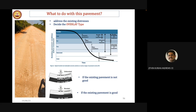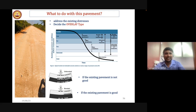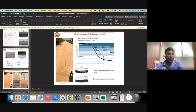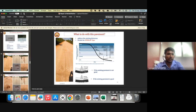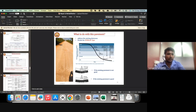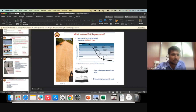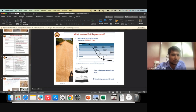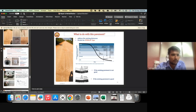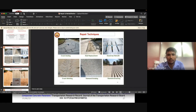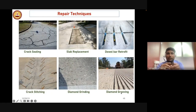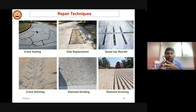Q: How to treat defect scaling in CC pavement surface? A: The most widely used repair techniques for CC pavements include crack sealing, slab replacement, dowel bar retrofitting, crack stitching, diamond grinding, and diamond grooving. The appropriate technique depends on the type of distress. IRC has provided guidelines for each case.